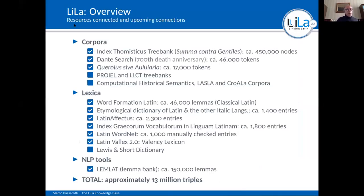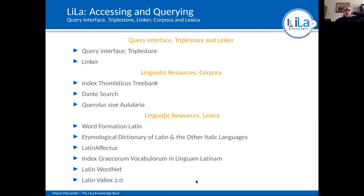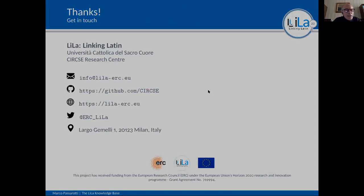To sum up, these are the resources currently connected to Lila and the upcoming connections. We are working on three treebanks and three different corpora. We will also soon link the Lewis and Short dictionary, and we are a bit worried about the number of triples — already 30 million. Each point in these slides is a link to a resource in the lemma bank, so you can just click the links and hopefully enjoy Lila. Thank you very much.